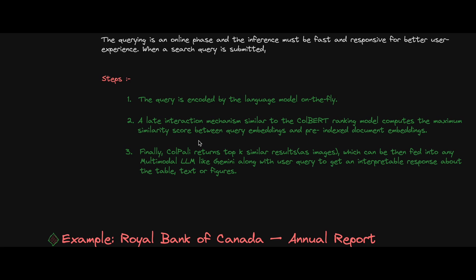It checks the similarity between your query tokens and the pre-indexed document tokens. Finally, ColPali returns the top-K similar results as images, which can then be fed into any multimodal RAG system — like Gemini, NEVA, or GPT-4o — and you can do the query with respect to those images.